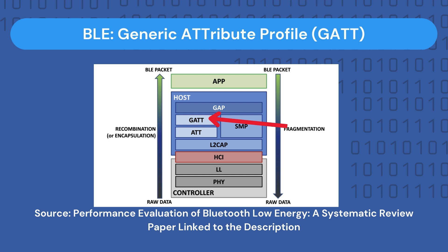Now let's take a look at GATT, or the Generic Attribute Profile. This layer defines the way two BLE devices transfer data back and forth using the notion of services and characteristics. Essentially, this protocol takes and encapsulates the attributes created at the Attribute Protocol layer and groups similar attributes into a concept known as a service. These attributes are then called characteristics of the service, and each characteristic is used to communicate a specific type of data.